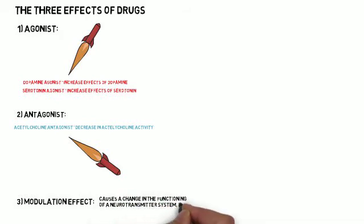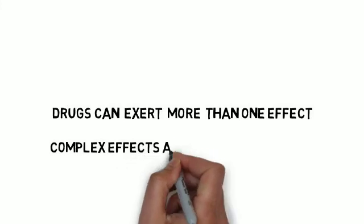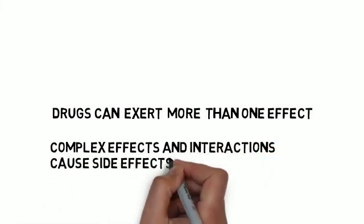A specific drug can cause more than one effect in different neurotransmitter systems. For example, the same drug could be a dopamine agonist and an acetylcholine antagonist at the same time. In fact, the effects of most drugs are rather complicated, and therefore, the source of side effects.